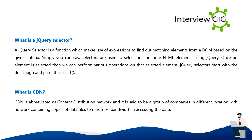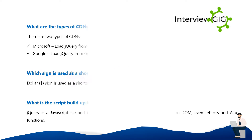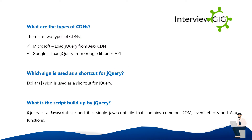CDN is a group of companies in different locations with a network containing copies of data files to maximize bandwidth when accessing the data. What are the types of CDNs? There are two types: Microsoft — loads jQuery from Ajax CDN; Google — loads jQuery from Google Libraries API.